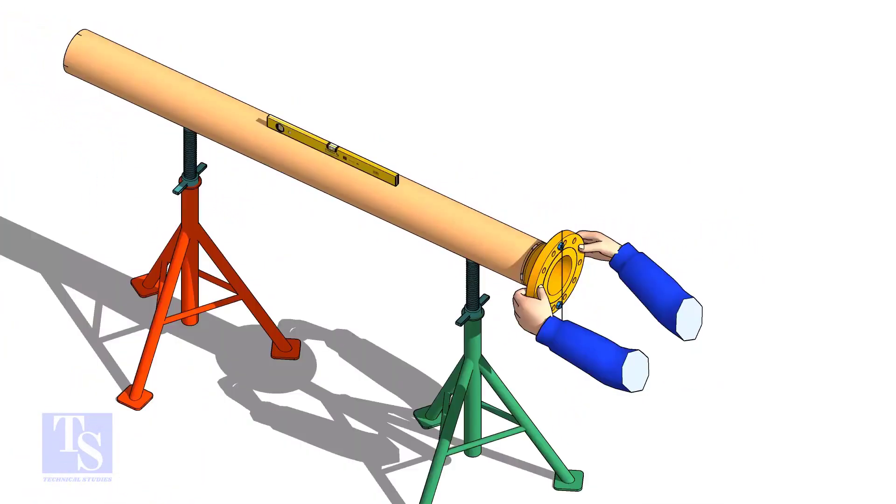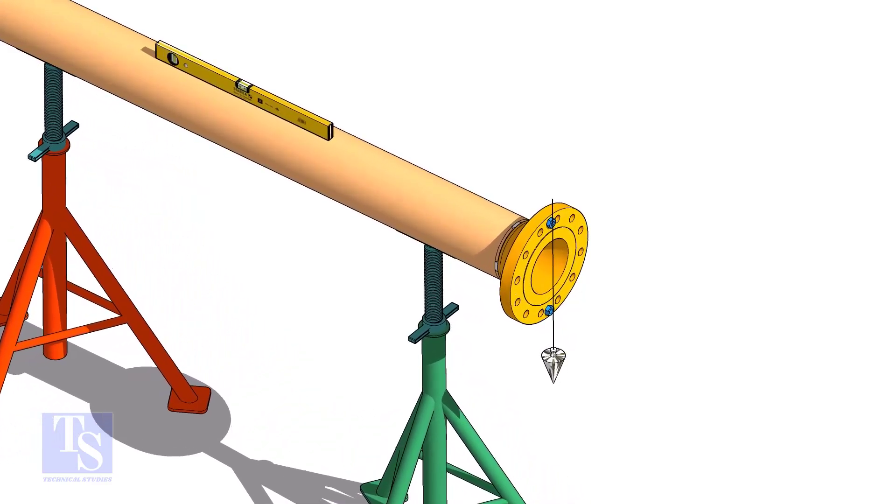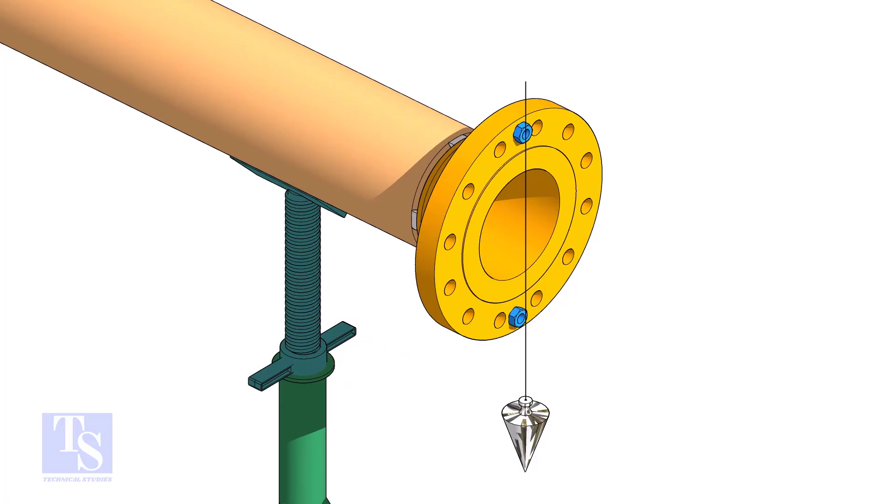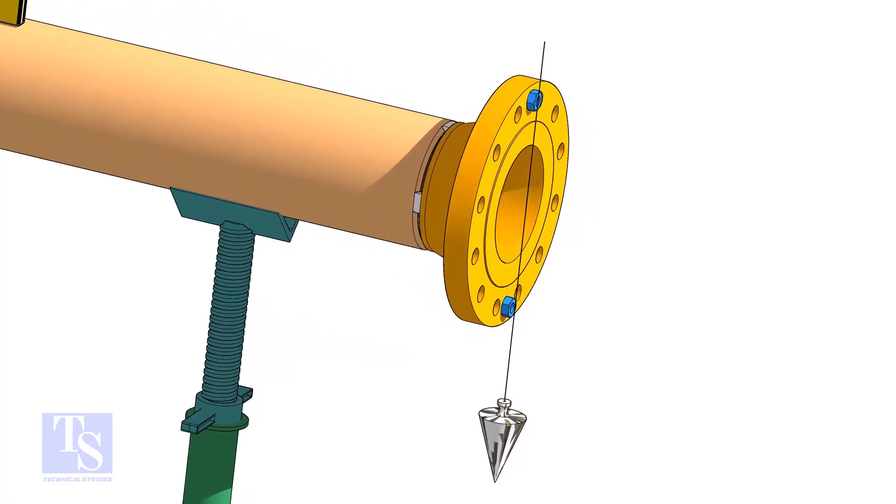In this method, let us learn how to fit up a flange with a pipe using a plumb. Level the pipe, put a plumb through the center of the flange on a nut.